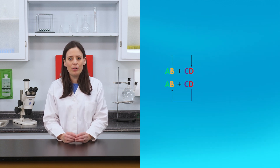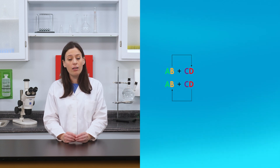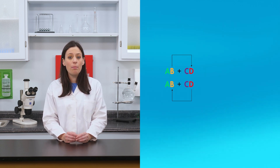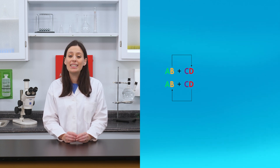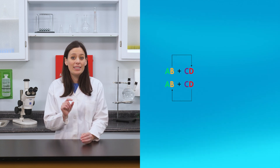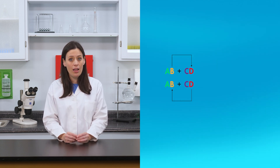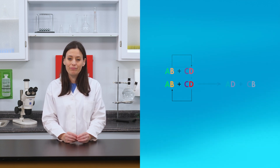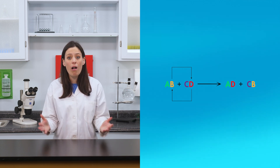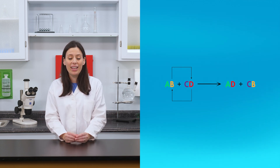In a double replacement reaction, each compound exchanges an ion with the other compound. Compound AB gives up ion B, which is accepted by compound CD. At the same time, compound CD gives up ion D, which is accepted by compound AB. The exchange of ions produces two new compounds, AD and CB.